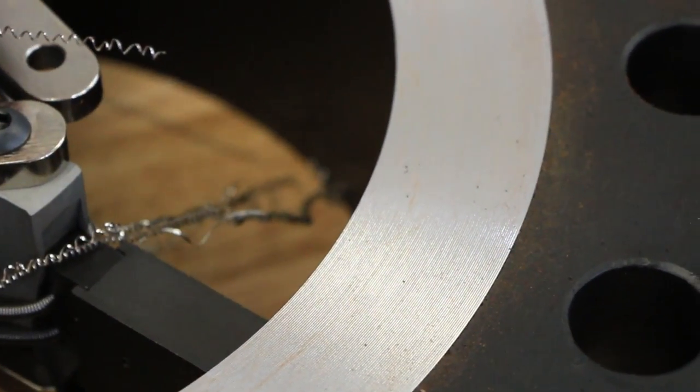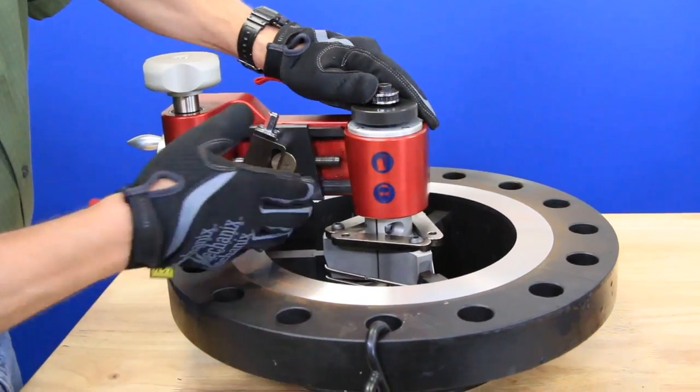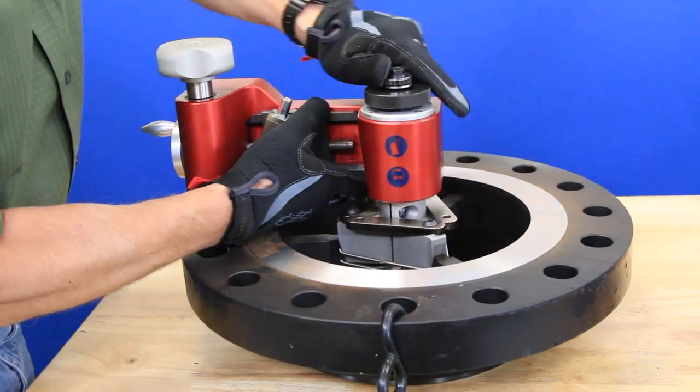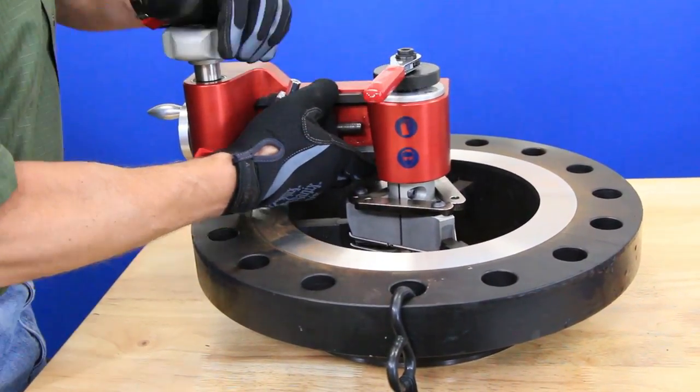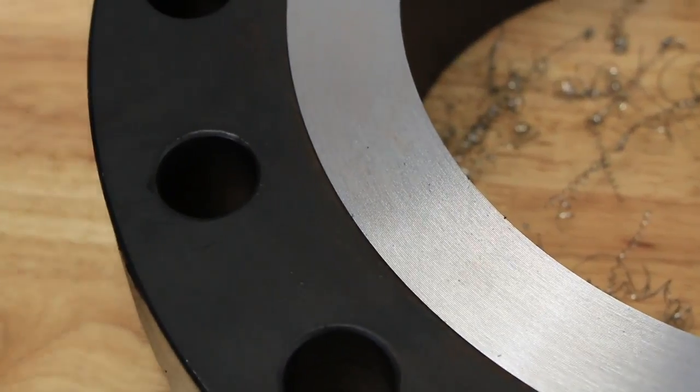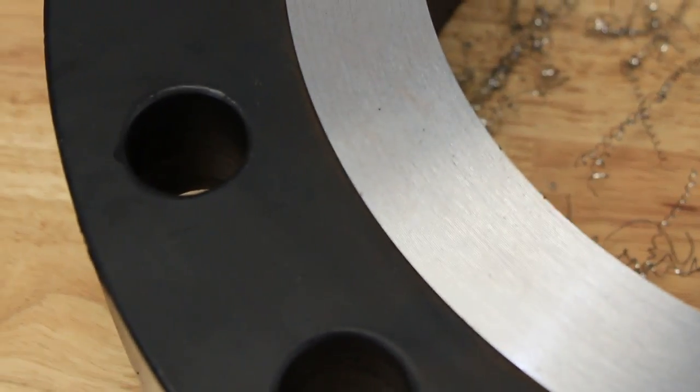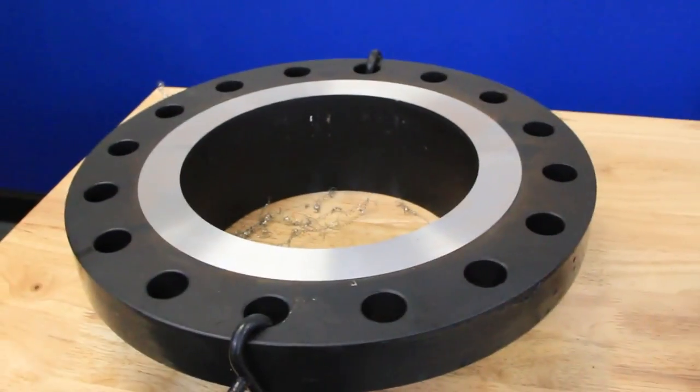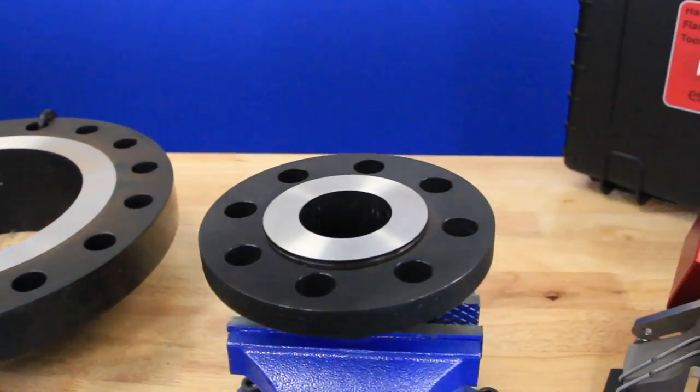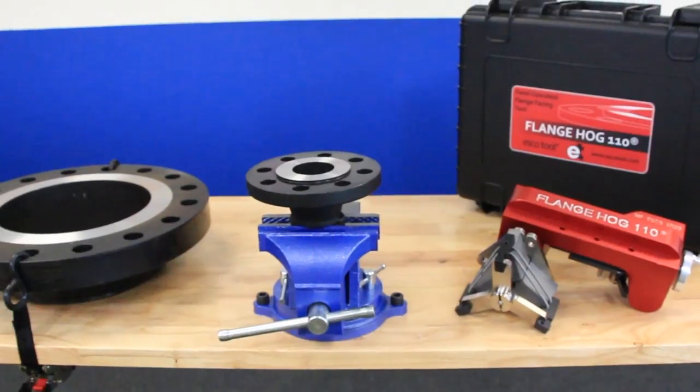Although the Flange Hog 110 is very easy to use, we suggest taking some time to practice on some spare flange stock in order to familiarize yourself with using it. Esquitool is more than happy to go over any questions you may have and encourage live demos through our sales reps or video conferencing to ensure that you have a full understanding of how to operate the tool. For more information, please feel free to visit our website or contact us and we will do anything we can to assist.